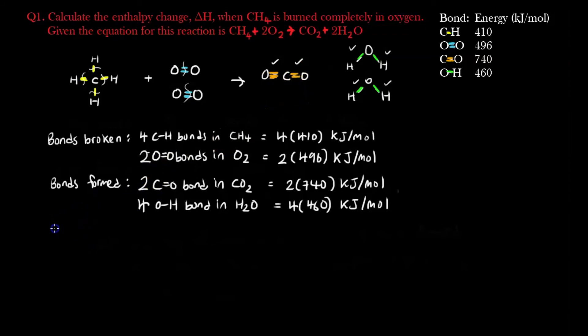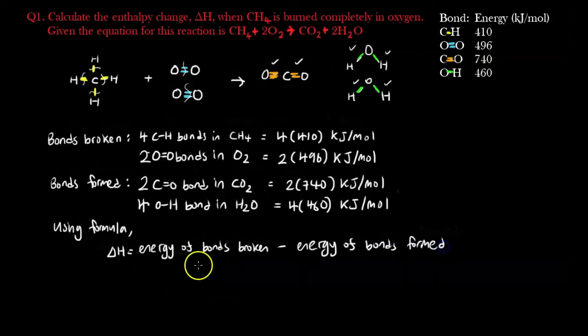And now we can finally use the formula. Using formula, change in H is energy of bonds broken minus energy of bonds formed. And I know energies of bonds broken are these two, so I use a square bracket, 4 times 410 plus 2 times 496, close bracket.